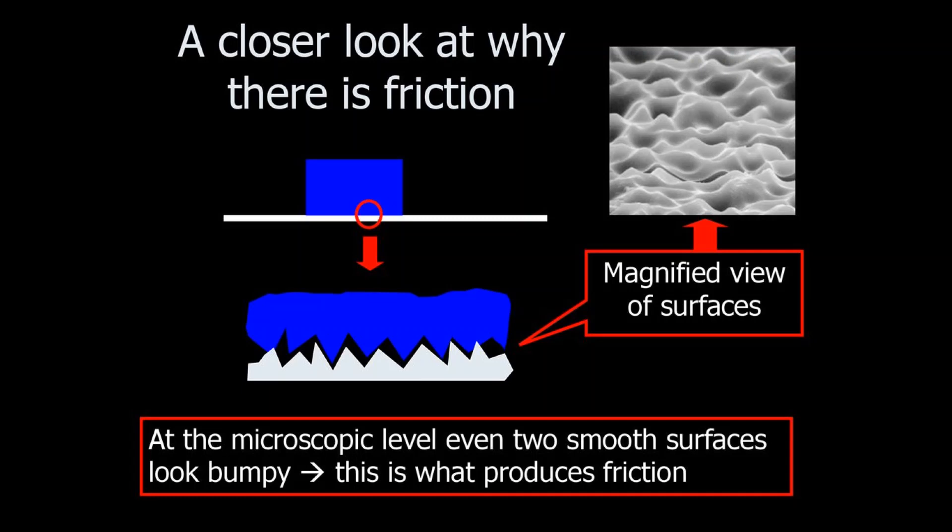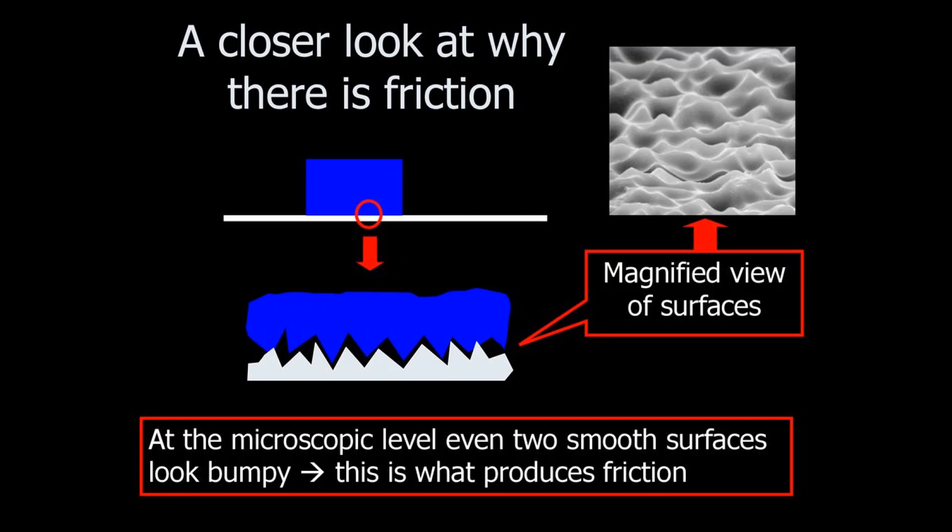Now think, what will happen when two of these surfaces rub against each other? When two of these, not really smooth surfaces, rub against each other, the pointy or hilly structures of these two surfaces would collide with each other and give rise to normal forces between them, which will oppose your action of rubbing as you could see from the illustration. That's why it requires energy to rub.